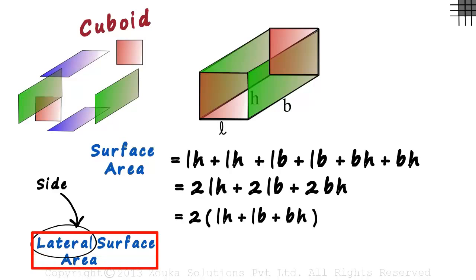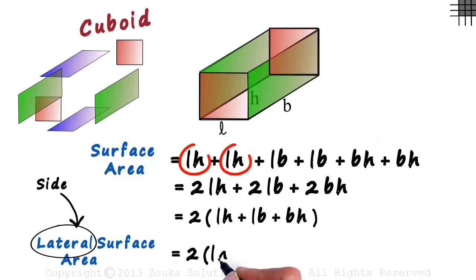The lateral surface area just equals the sum of the areas of these four rectangles. The sum of the green rectangles would be BH plus BH, and the sum of the red rectangles will be LH plus LH. The total lateral surface area will be twice LH plus BH.